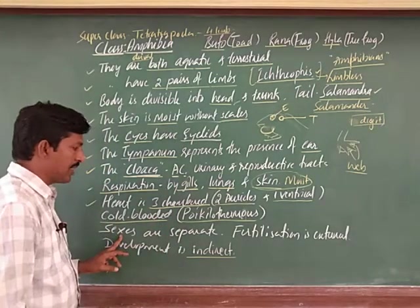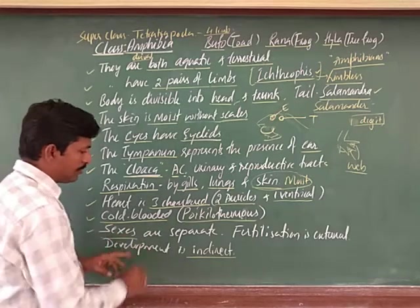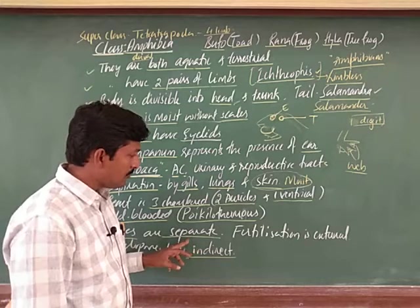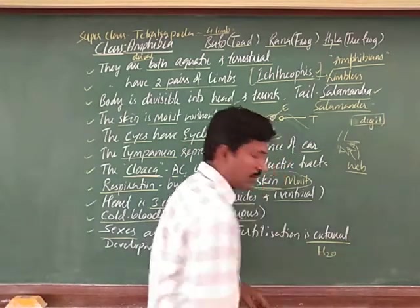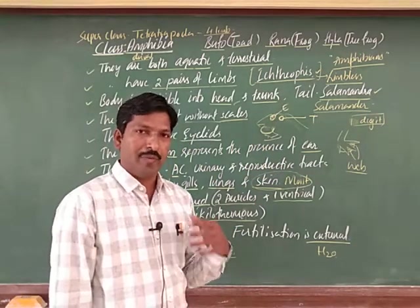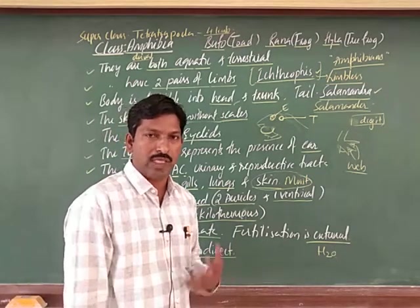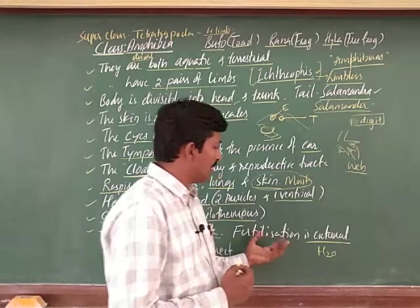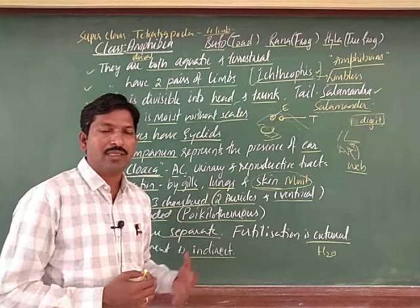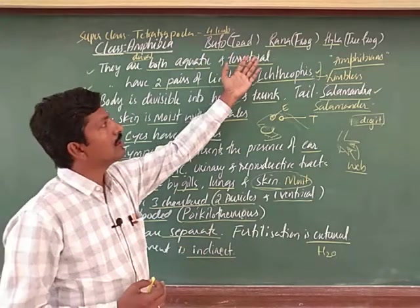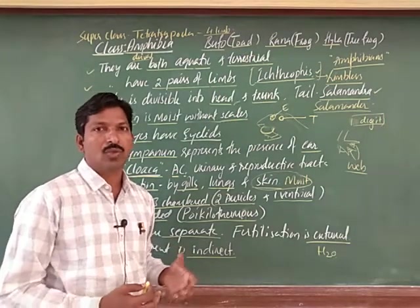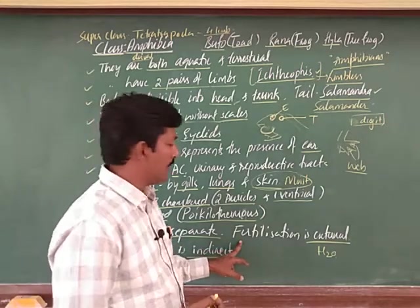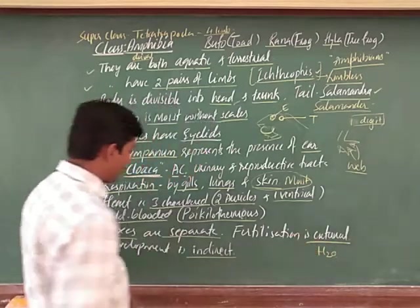The sexes are separate — they are unisexual, with single sex ratios. Fertilization is external: the female lays eggs in water, usually stagnant water in the corner of water bodies, and the male also releases sperm at that place. Parental care may also be observed — toads and Rana can carry their eggs wherever they go until they hatch.